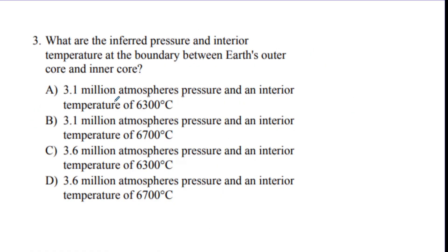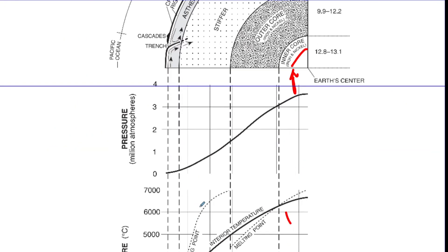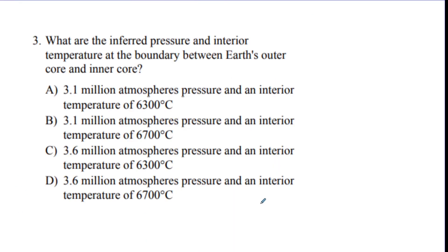Number three, what are the pressure and temperature of the boundary between the outer and inner core? So this is another page 10. We talked about how to do this. Go to the outer and inner core boundary right here. Go down to the pressure line. So it's looking like 3.1 million atmospheres, about. And then down here to the temperature line, about 6,200. So we want 3.1 6,200. 3.1 6,300. Close enough. Answer is A. Sometimes you got to estimate on these questions.